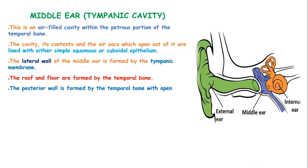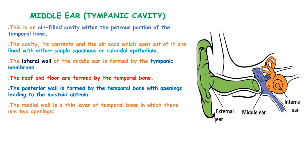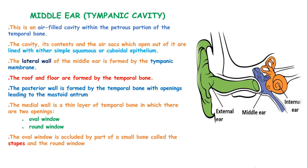The posterior wall is formed by the temporal bone with openings leading to the mastoid antrum. The medial wall is a thin layer of temporal bone in which there are two openings: the oval window and the round window. The oval window is occluded by a part of the small bone known as the stapes, and the round window by a fine sheet of fibrous tissue.